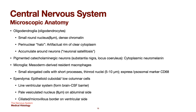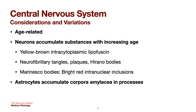There are also pigmented catecholaminergic neurons — the substantia nigra and locus coeruleus — containing cytoplasmic neuromelanin. Microglia are mesoderm-derived resident macrophages. Ependymal cells are epithelioid cuboidal or low columnar cells lining the ventricular system, with a pale vesiculated nucleus on the abluminal side and a ciliated or microvillous border on the ventricular side. Age-related considerations include neurons accumulating yellow-brown intracytoplasmic lipofuscin, neurofibrillary tangles, plaques, Hirano bodies, and Marinesco bodies — bright red intranuclear inclusions. Astrocytes accumulate corpora amylacea in processes with age.